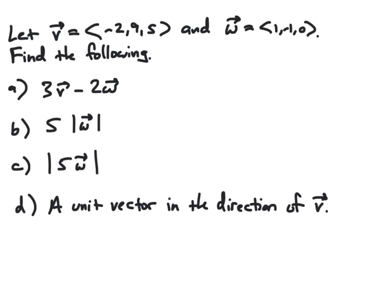In this example, we let V be the vector with component form and W the vector with component form. We then need to find the following things: first, the vector 3V minus 2W, then 5 times the magnitude of W, the magnitude of 5 times W, and a unit vector in the direction of V.